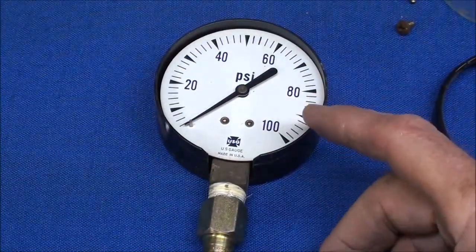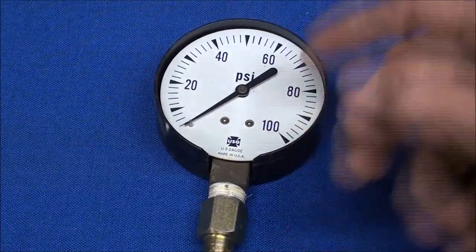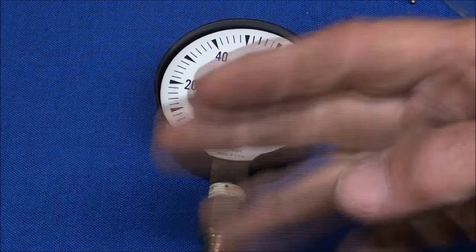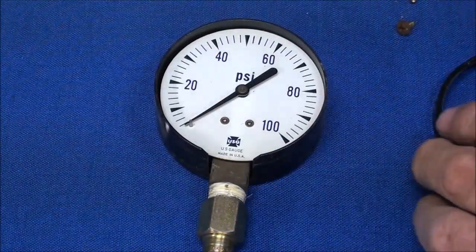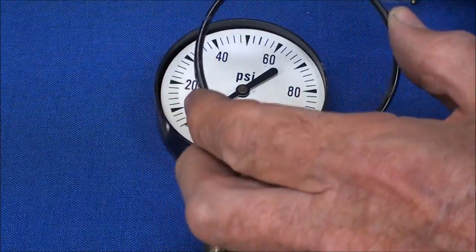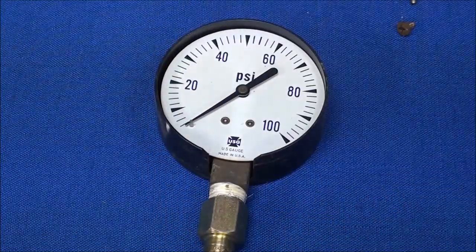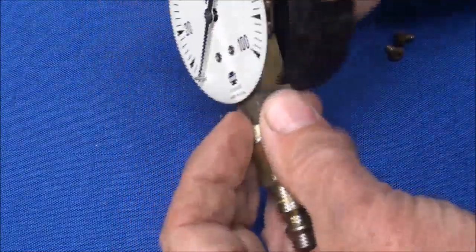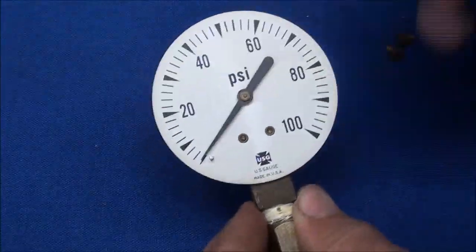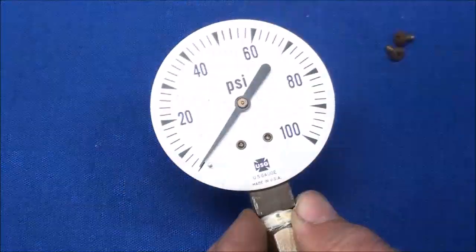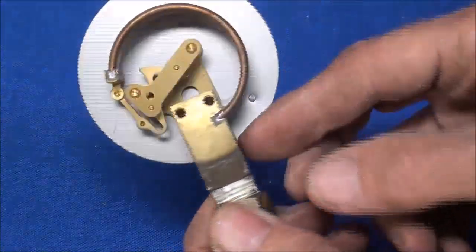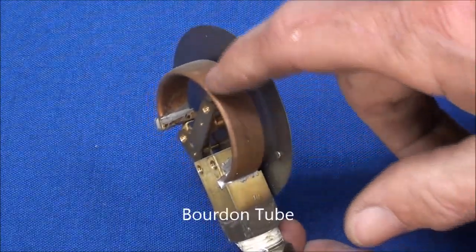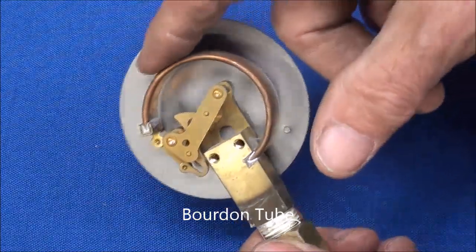This is quite an inexpensive gauge. Some of the better ones are going to be sealed, maybe even stainless steel, and filled with glycerin to lubricate and to keep the needle from vibrating. But I simply took off the front ring, which was pressed on along with the lens, and on the back were two screws, which I've taken out. Just a protective cover is all that is, and the entire mechanism here is brass, with the exception of the copper tube here, which we call the Bourdon tube.